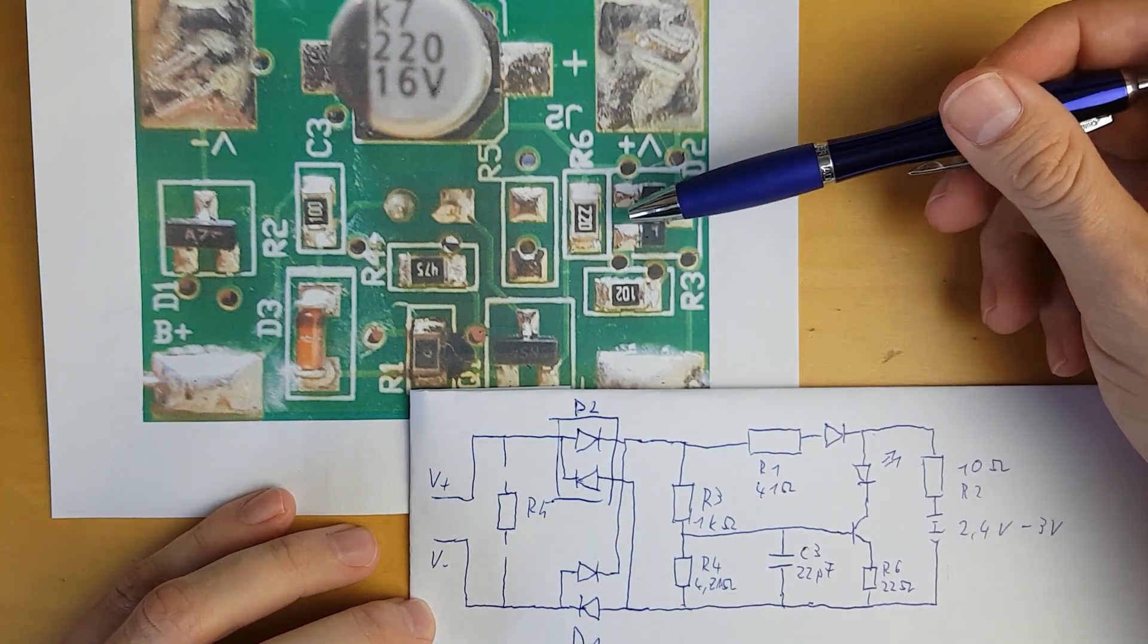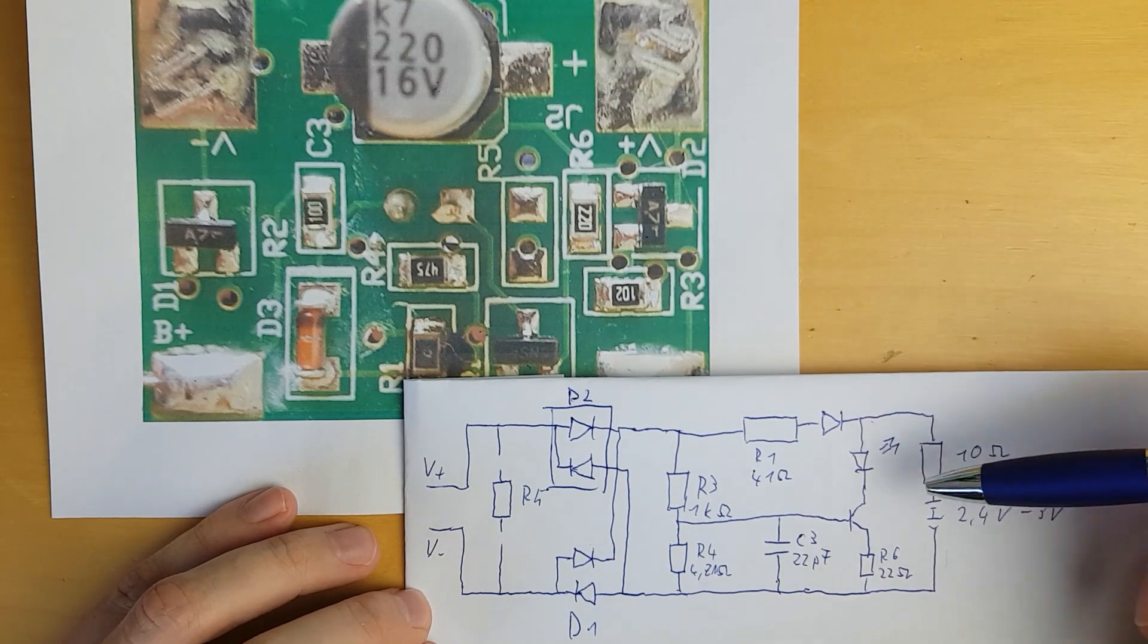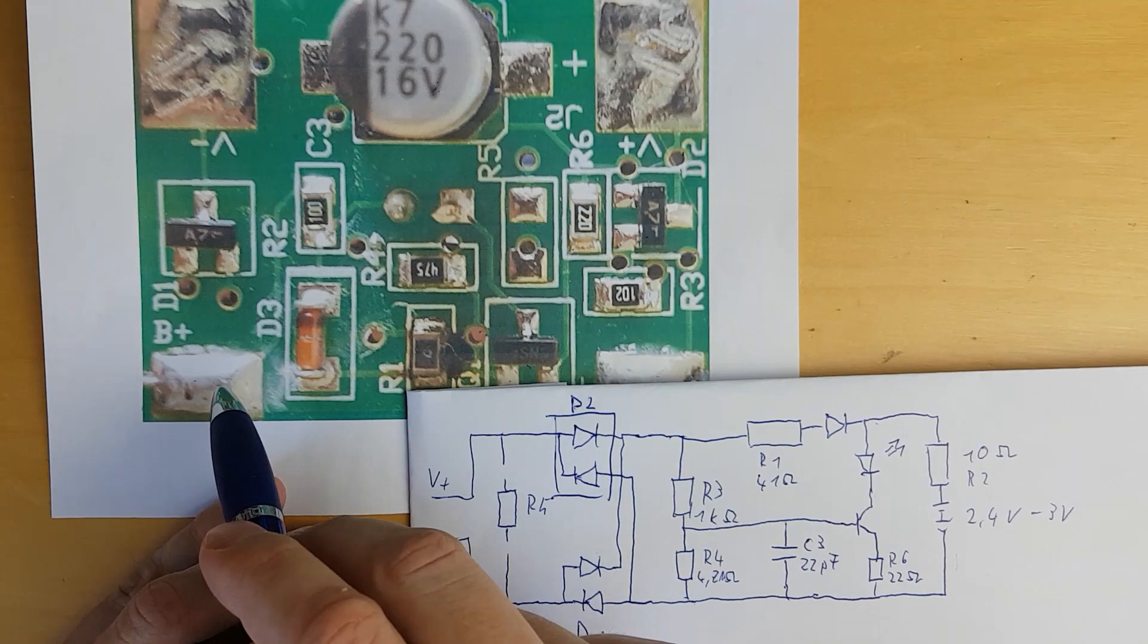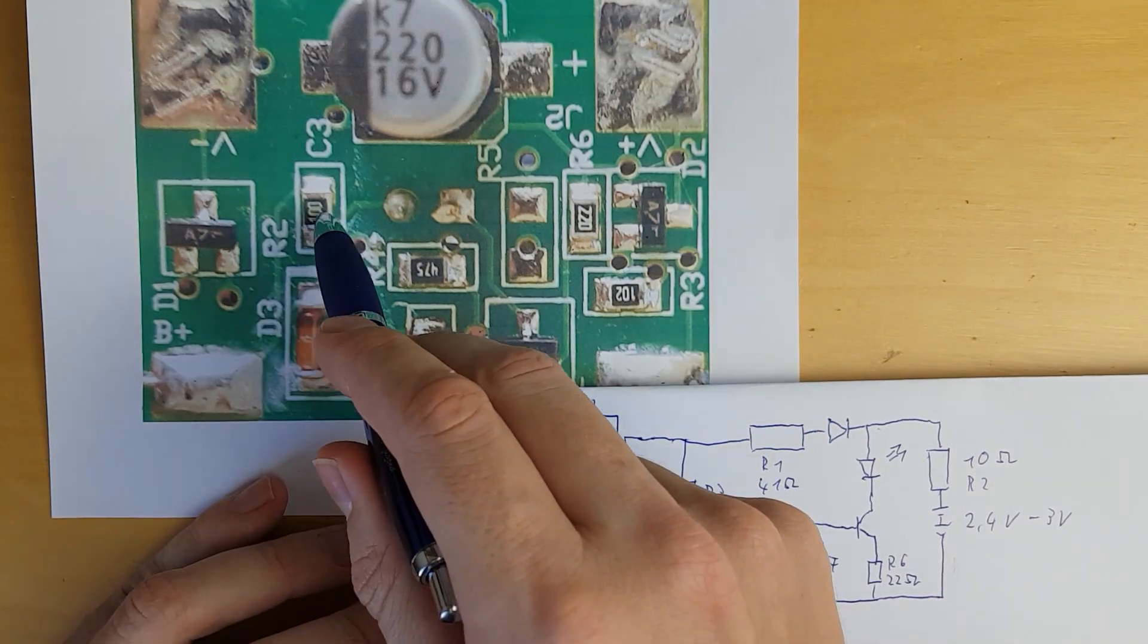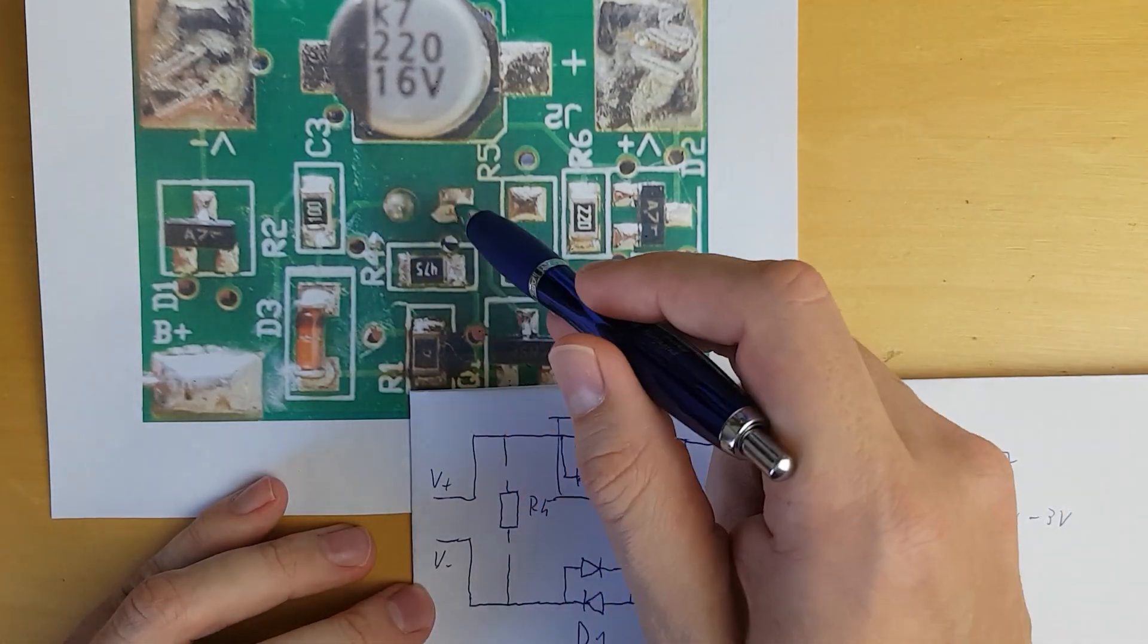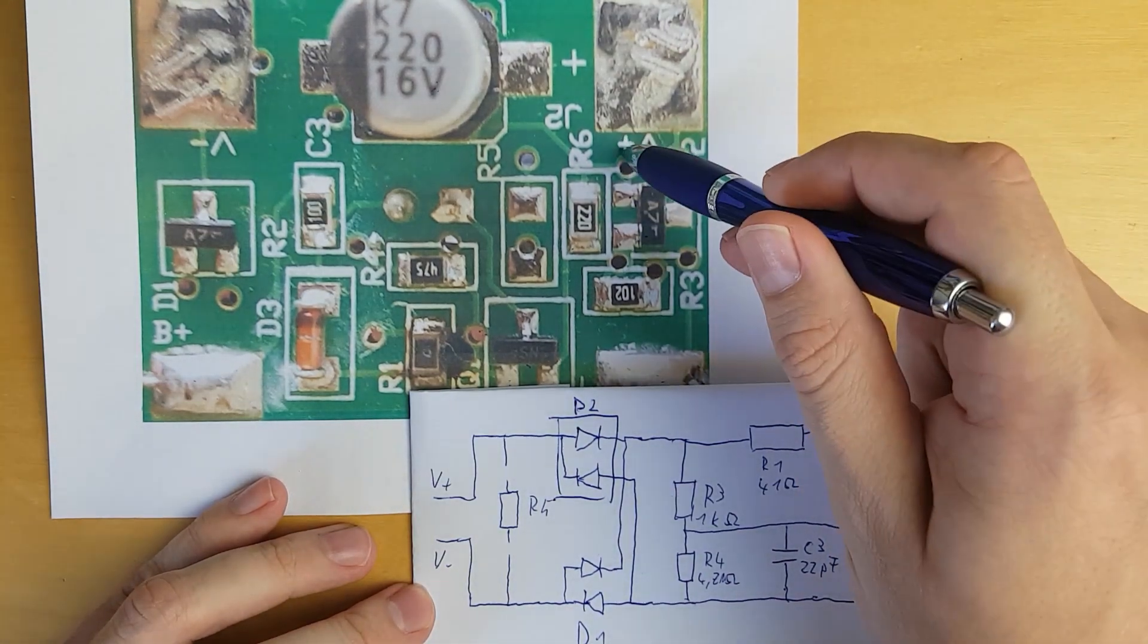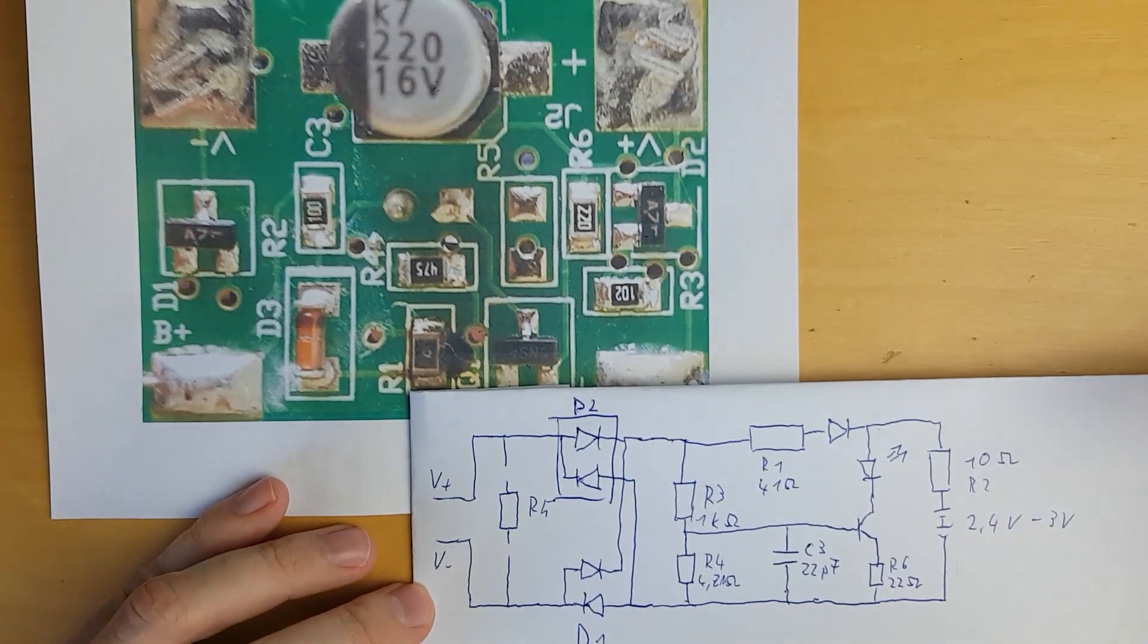And in parallel to this, we have the battery which is connected via this R2 with 10 ohm to the LED, to the transistor, to the R6, and then back to the battery via this link on the other side.